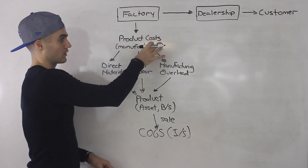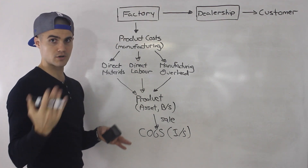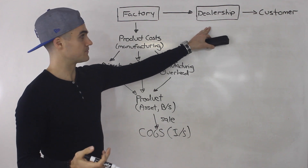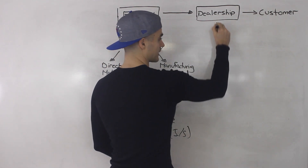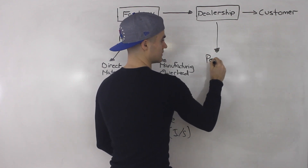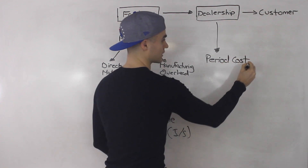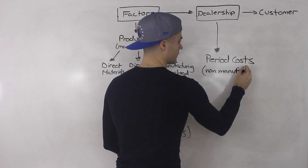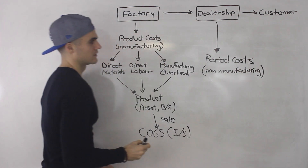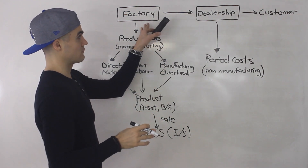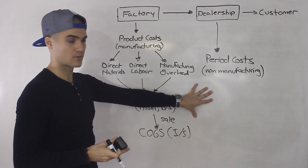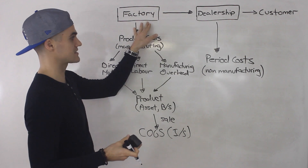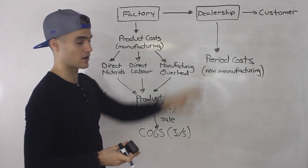So that's basically how product costs work — they're manufacturing costs, incurred in the factory. Going back to our example of the car company, the other part is the dealership, which is responsible for selling the car. That's where you incur your period costs. Period costs are basically non-manufacturing costs. In this example we only have a factory and a dealership, but there could also be a headquarters where maybe the CEO is and an accounting department — those would also fall under period costs. Basically any part of the company that's not the factory incurs period costs.